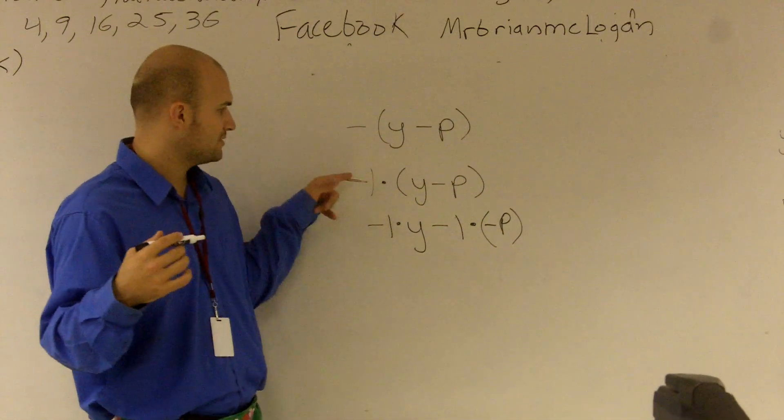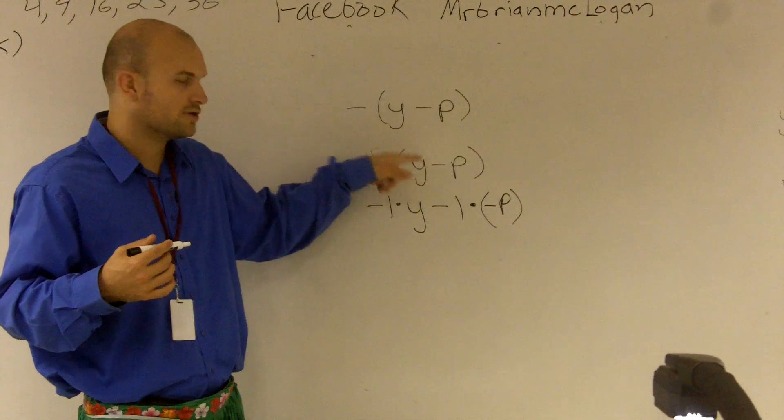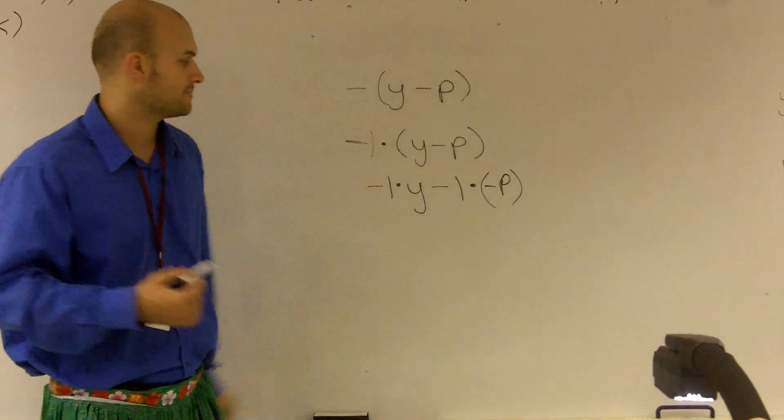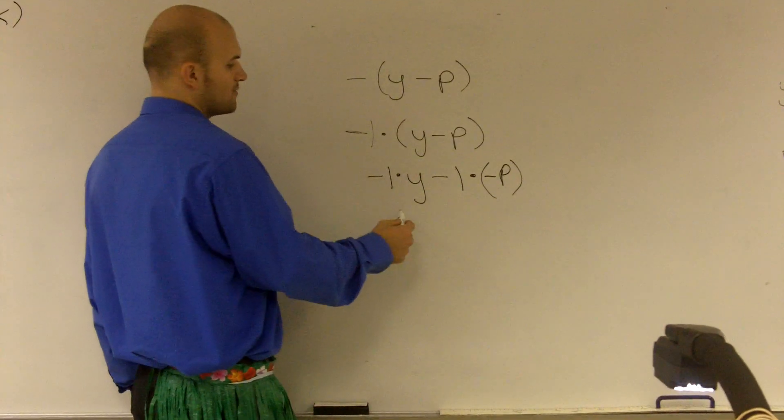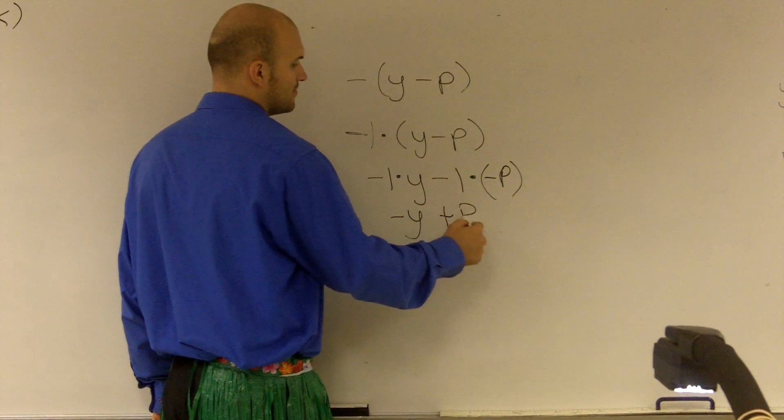And the other big mistake is, a lot of people are going to say, oh, it's just y is going to be negative. No. This negative 1 goes to the y, and it goes to the p. So a negative 1 times y is a negative y. A negative 1 times a negative p is a positive p.